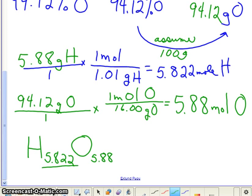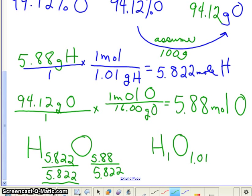5.88 is smaller than 5.88, so I'm going to divide both of these by the same number. And when I divide, 5.88 divided by 5.88, I get a subscript of 1 under the hydrogen, since that was the same number divided by itself, and the other value is essentially 1, 1.01. Well, isn't that essentially 1? Yes.